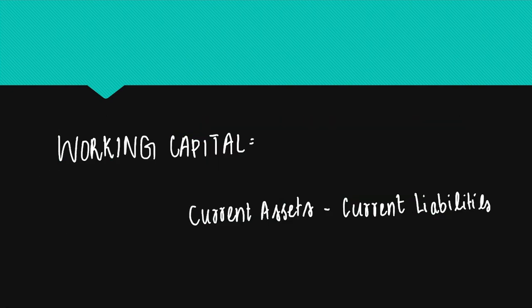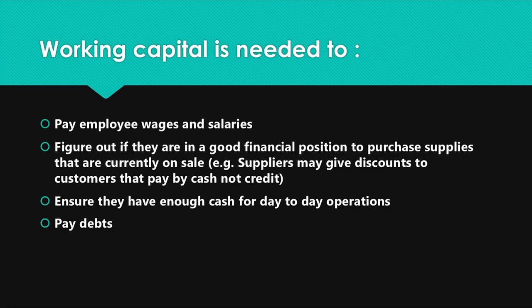The formula for calculating working capital is current assets minus current liabilities. In your exam, you may be asked to calculate the opening balance or closing balance of a cash flow forecast. Working capital is needed to pay employee wages and salaries, to determine if the business is in a good financial position, to purchase supplies on sale — for example, suppliers may give discounts to customers that pay by cash — and to ensure the business has enough cash for day-to-day expenses and to pay debts.